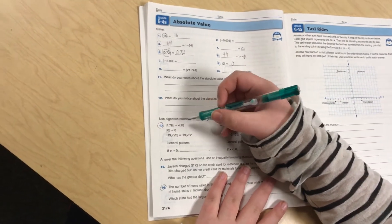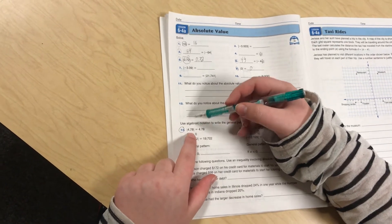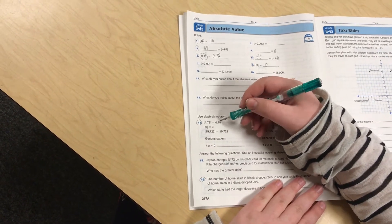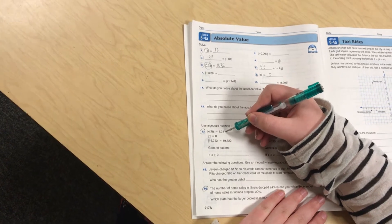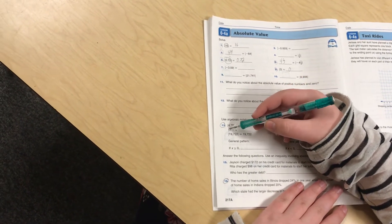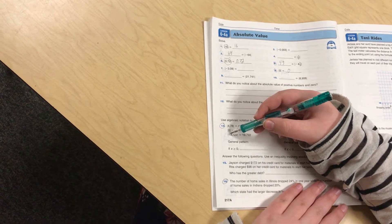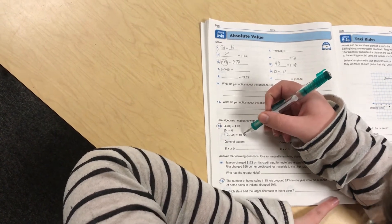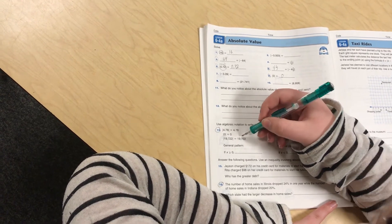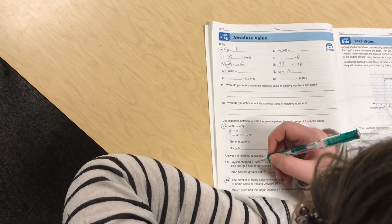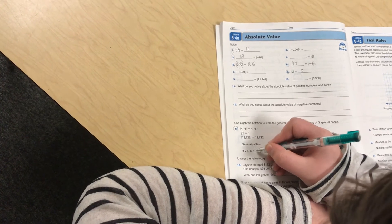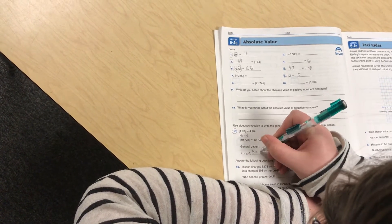And then we'll write a general pattern for 13. It says the absolute value of 4 and 78 hundredths, and the absolute value of it is 4 and 78 hundredths. And the absolute value of 0 is 0, and the absolute value of 19,722 equals 19,722. So a general pattern would be, we'll write about variable s as the value of it. Absolute value equals s.